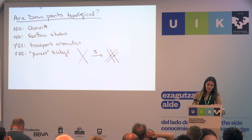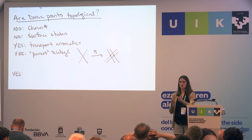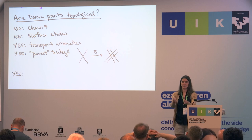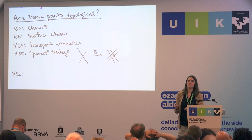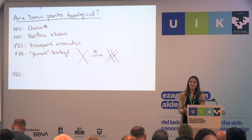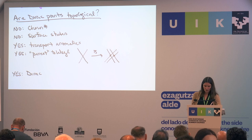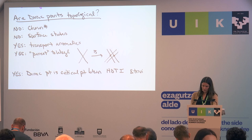More recently, there's another argument why we might say yes. Yesterday I talked about how we can consider a Weyl point to be a critical point between two 2D phases — a 2D Chern insulator and a 2D trivial insulator. If we consider our 3D system to be a stack of 2D phases with Kz as a tuning parameter, then the Weyl point is this critical point. For Dirac points, there's a similar story: the Dirac point can be considered a critical point between a higher-order topological insulator and a trivial insulator.